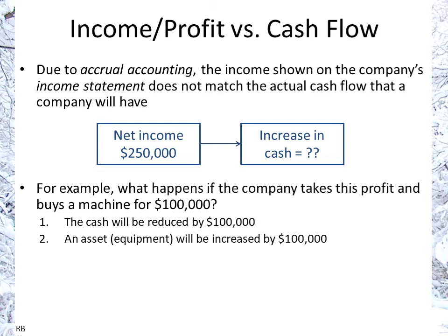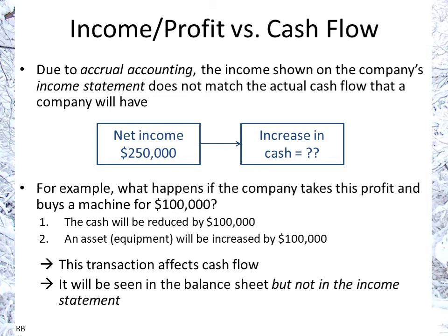From a balance sheet point of view, you'd have cash going down by $100,000 and you'd have a fixed asset — the machine or the equipment — going up by $100,000. So it does affect cash flow, but as you'll notice, nothing will happen on the income statement. If you buy an asset, nothing happens to your income statement. So income and cash flow can diverge.